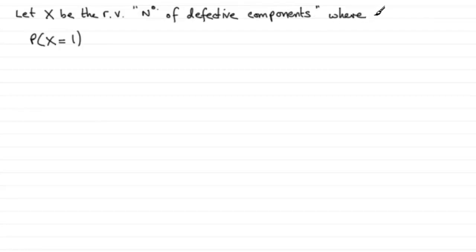X is distributed as a binomial distribution, and I know that because there's a finite number of trials. We're told that the components are packed in boxes of 10, so it will be 10 for the parameter n.